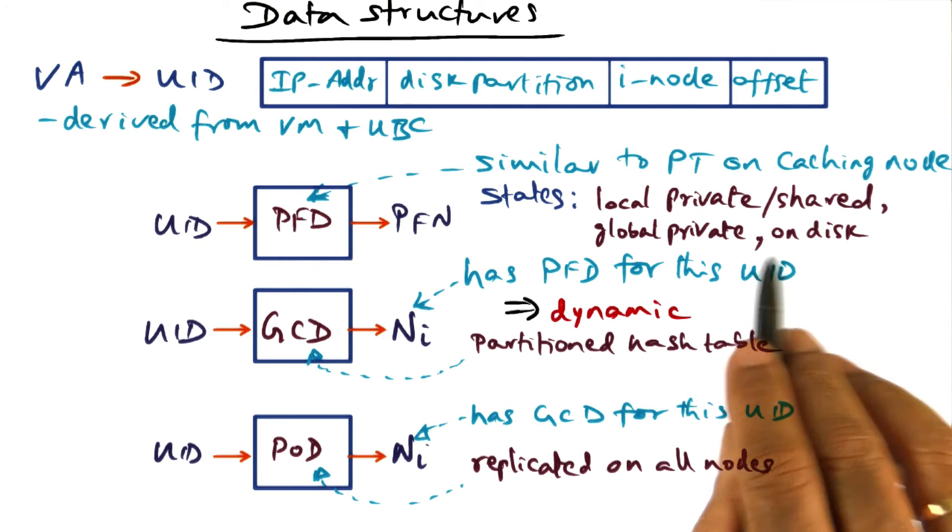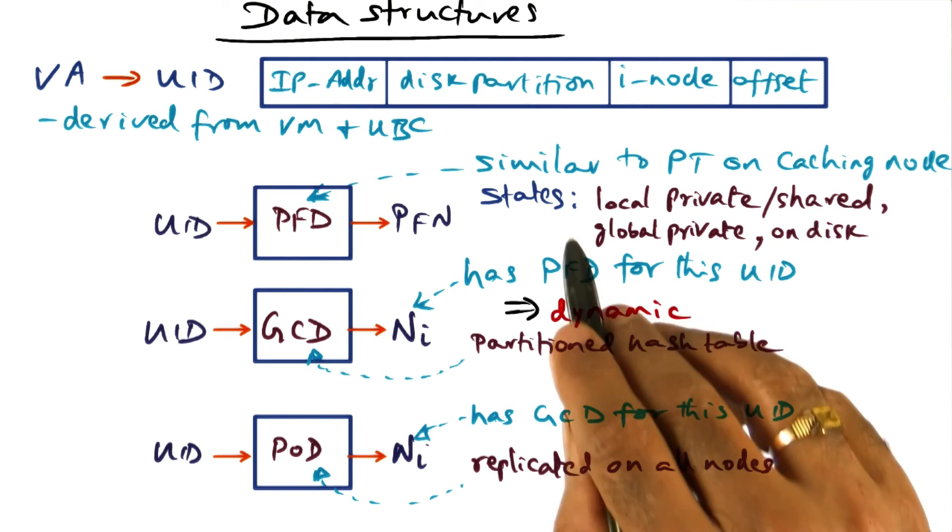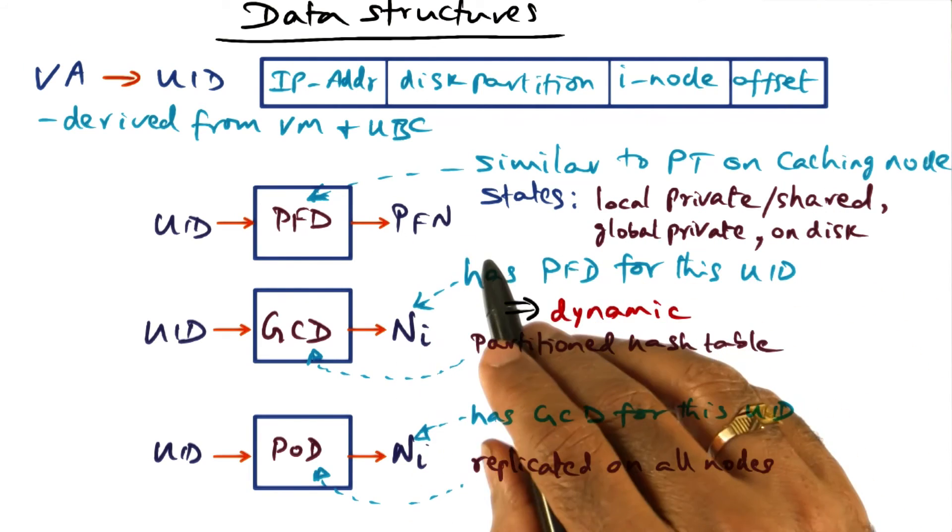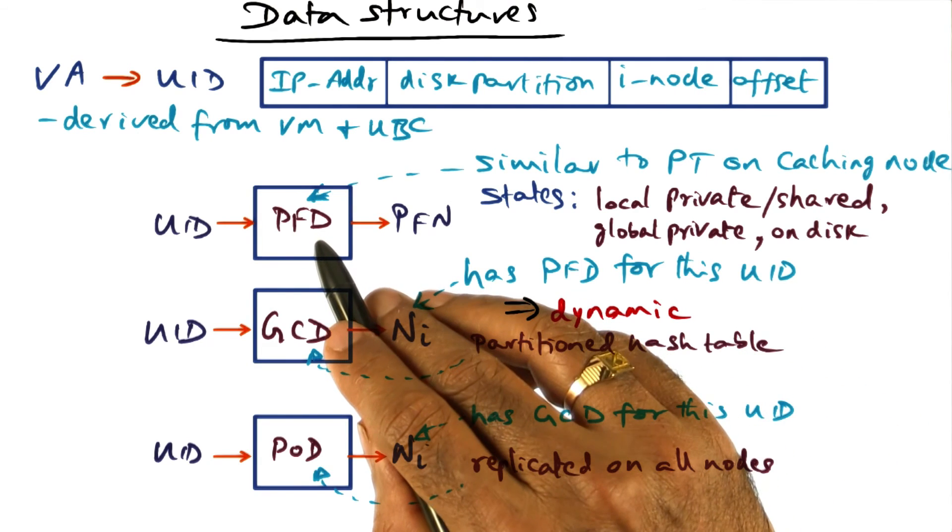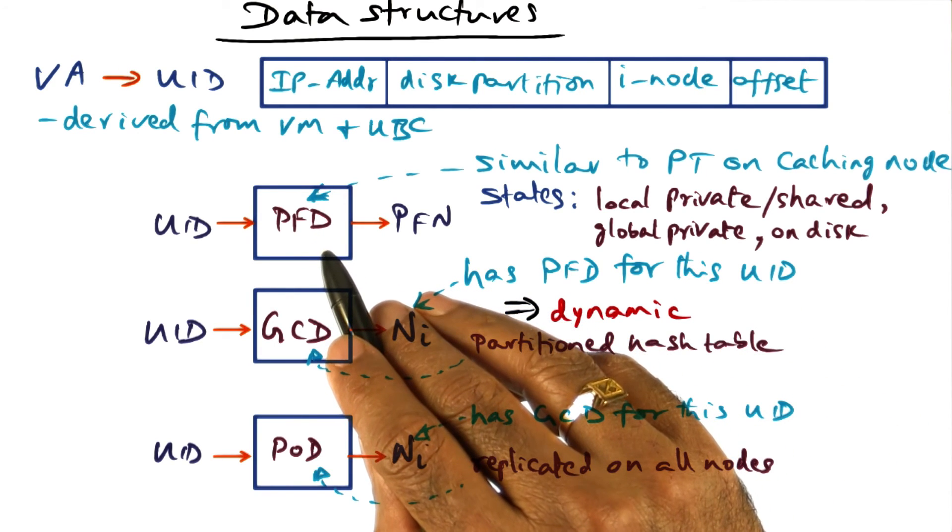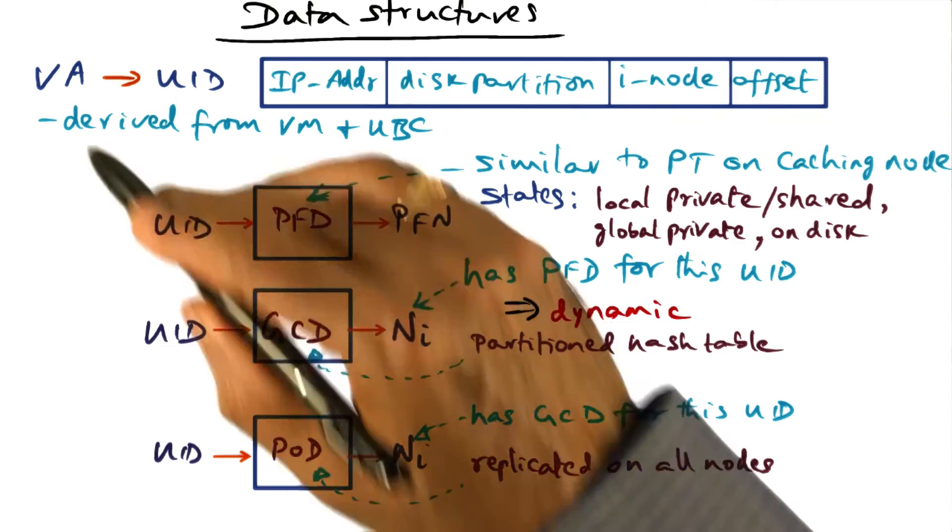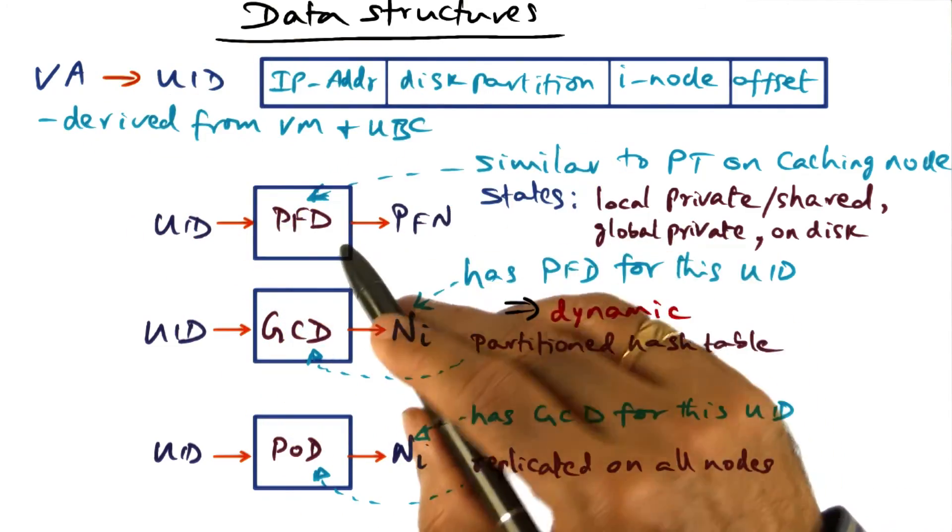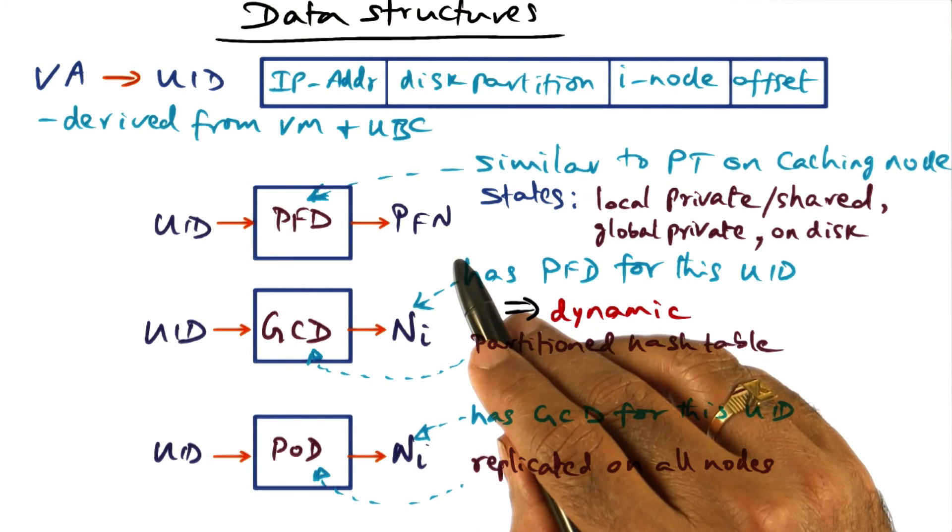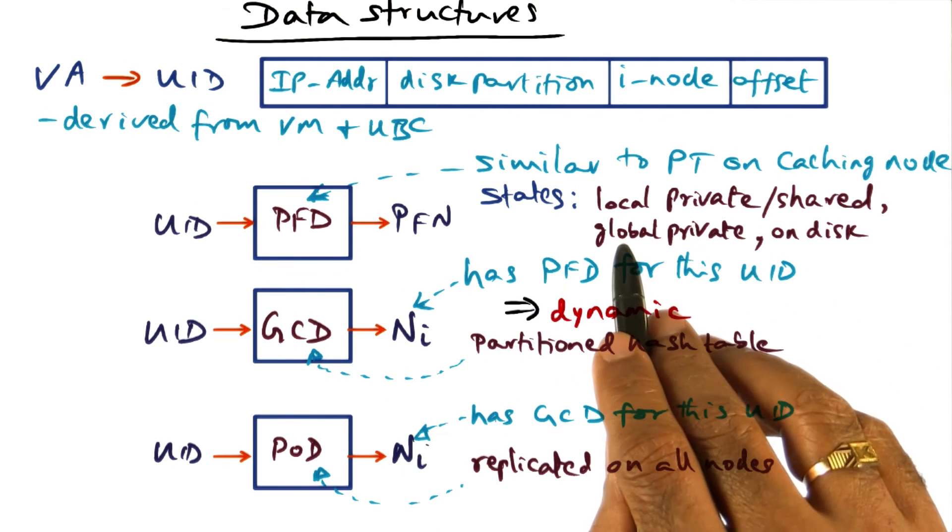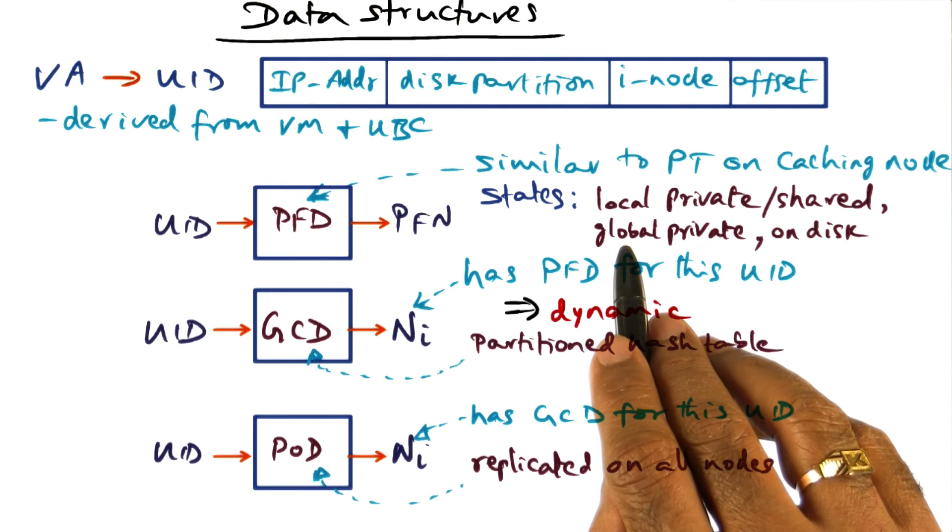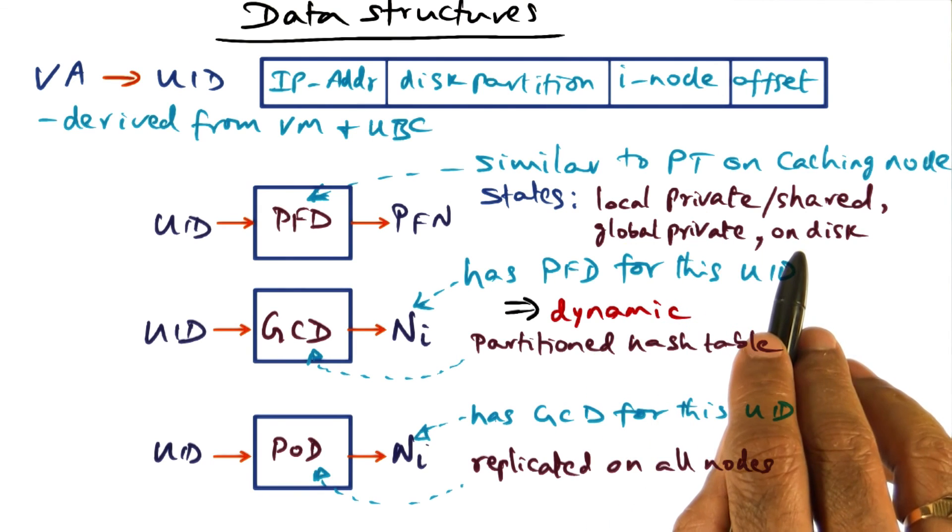And the last possibility is that it's not in the physical memory of a node, but it is on the disk. So the page frame directory, just like a page table, says that either this page that you're looking for, go from VA to UID, that page is in physical memory, and it is one of these three states, or it's not in the physical memory, it's on the disk.